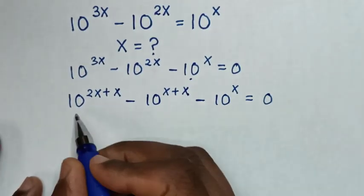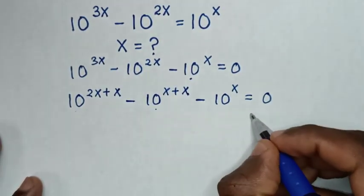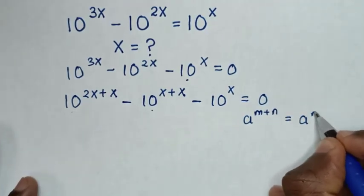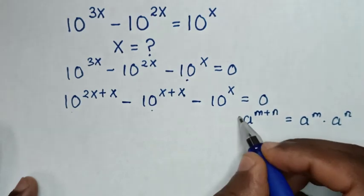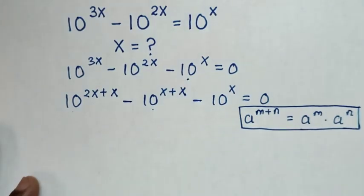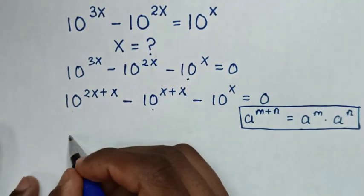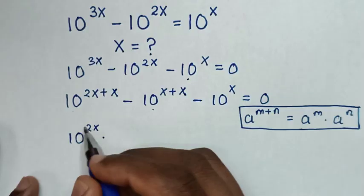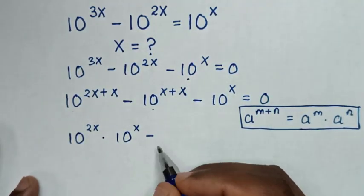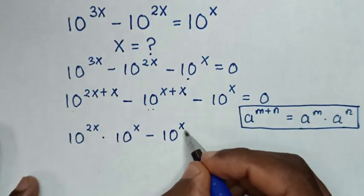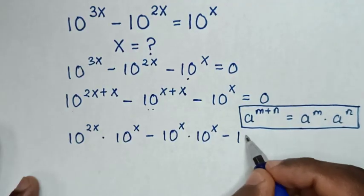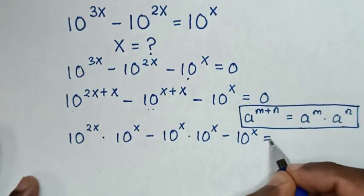We apply the exponential rule that a to the power of (m + n) equals a to the power of m times a to the power of n. So here it will be 10 to the power of 2x times 10 to the power of x, then minus 10 to the power of x times 10 to the power of x, minus 10 to the power of x, is equal to 0.